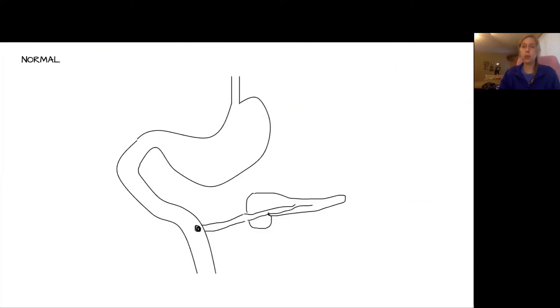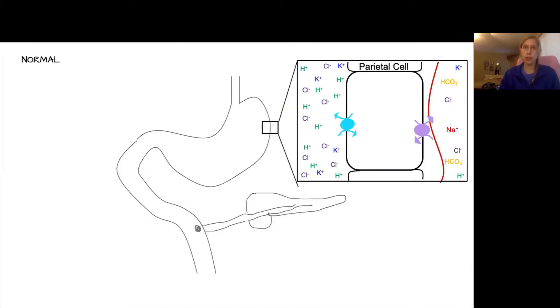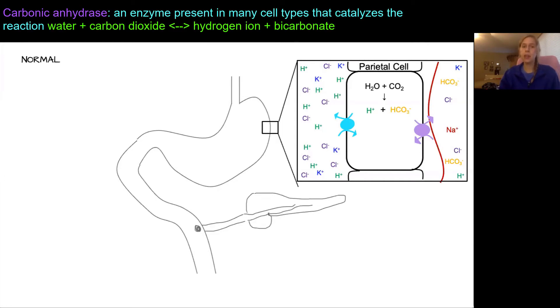So let's first walk through some normal physiology in the GI tract. Starting in the stomach, one of the main cells of the mucosa is the parietal cell. A key reaction of the parietal cell is catalyzed by carbonic anhydrase, and this combines water and carbon dioxide to create acid or hydrogen and bicarbonate.